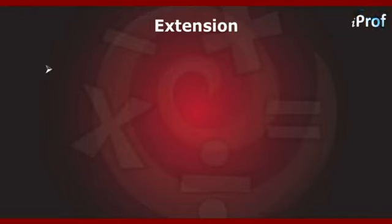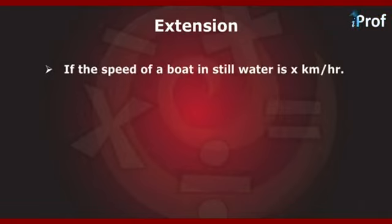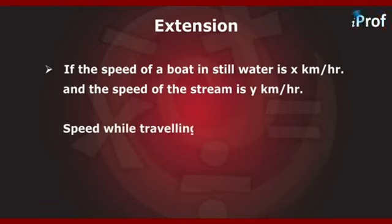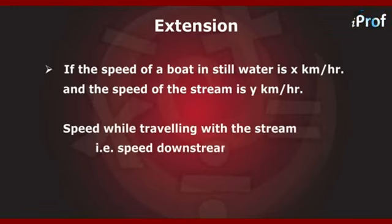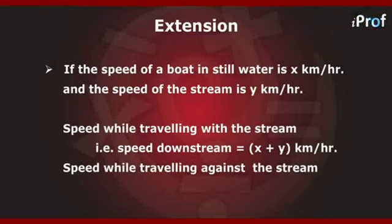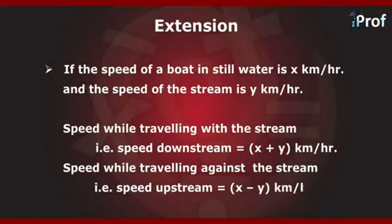Suppose the speed of a boat in still water is x km/h and the speed of the stream is y km/h. Then the speed downstream (traveling with the stream) is x + y km/h, and the speed upstream (traveling against the stream) is x − y km/h.